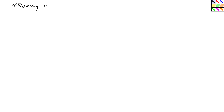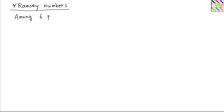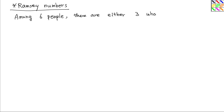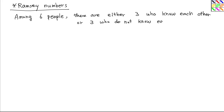In this video, we are going to learn Ramsey numbers. Suppose that there are six people. Among six people, the fact is there are either three people who know each other or three people who do not know each other. This is the basic form of Ramsey theory. Let's prove this fact.